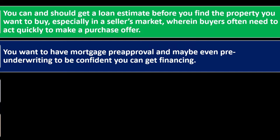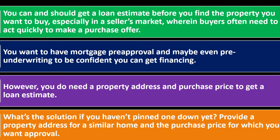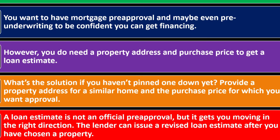You want to have mortgage pre-approval and maybe even pre-underwriting to be confident you can get financing. However, you do need a property address and purchase price to get a loan estimate. If you haven't found a property yet, provide the address of a similar home and a purchase price for which you want approval. A loan estimate is not an official pre-approval, but it gets you moving in the right direction. The lender can issue a revised loan estimate after you've chosen a property.